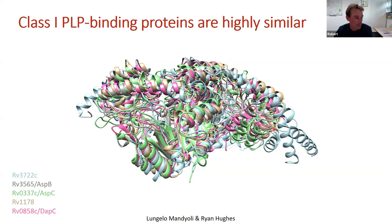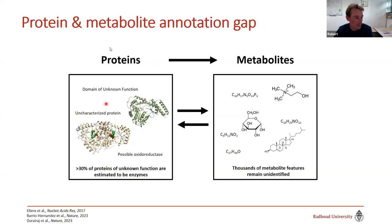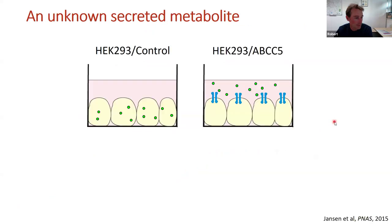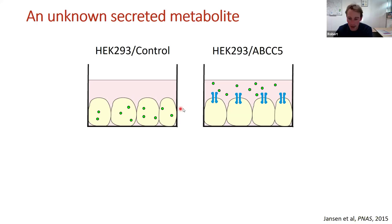That concludes the first example: untargeted metabolomics can annotate an unannotated enzyme and extend findings to whole protein families. Now for the first vignette going from metabolite to protein, which started at the Netherlands Cancer Institute where we were studying ABC transporters — proteins that pump substrates out of cells.